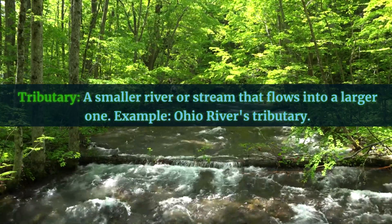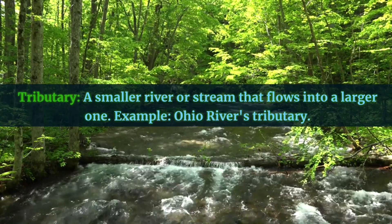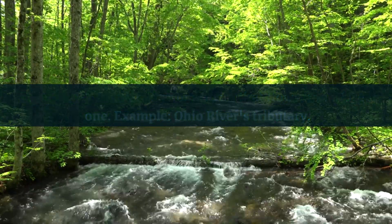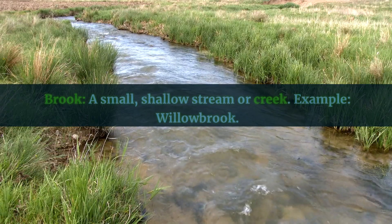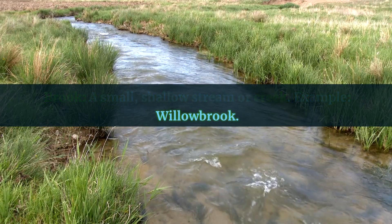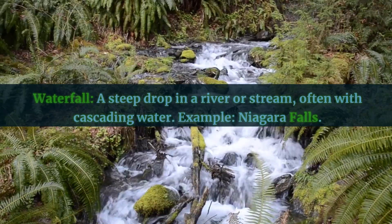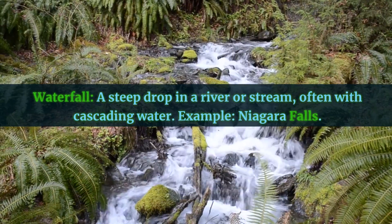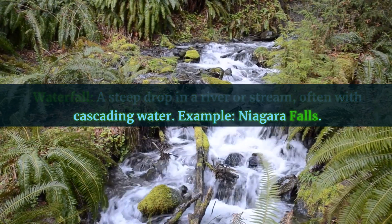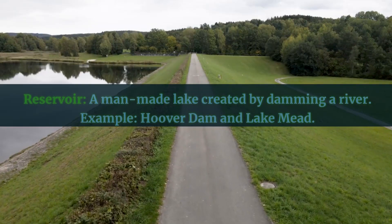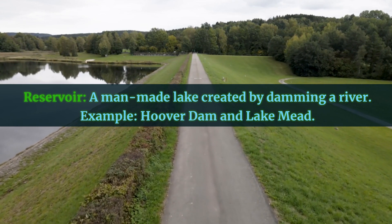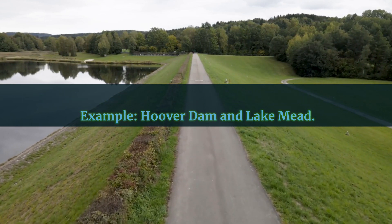Tributary: a smaller river or stream that flows into a larger one. Example: Ohio River's Tributary. Brook: a small, shallow stream or creek. Example: Willowbrook. Waterfall: a steep drop in a river or stream, often with cascading water. Example: Niagara Falls. Reservoir: a man-made lake created by damming a river. Example: Hoover Dam at Lake Mead.